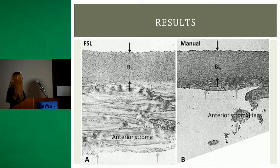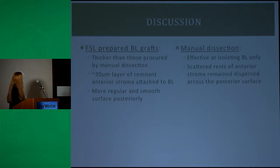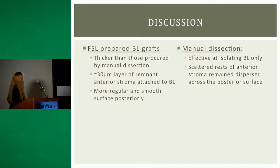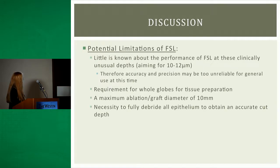Placing those images side by side, you can see the difference in thickness, the smooth posterior edge from the femtosecond laser versus the more irregular edge with some anterior stromal tags from manual dissection. The femtosecond laser, due to how we set it up, yielded about 30 microns of adherent anterior stroma, compared to effectively isolating just Bowman layer with the manual dissection technique.